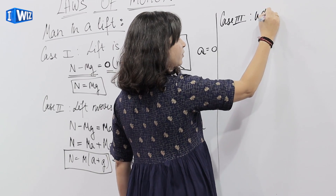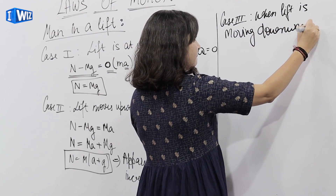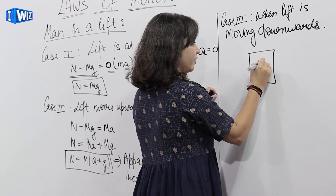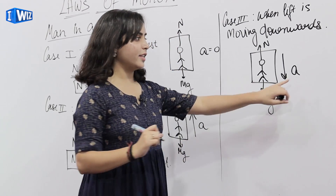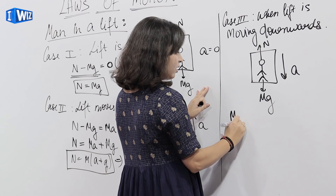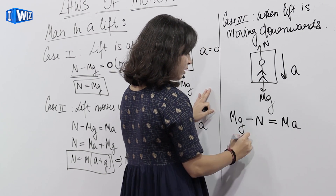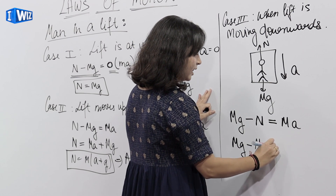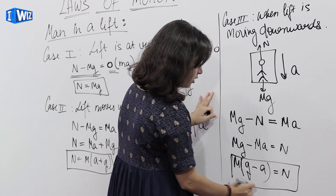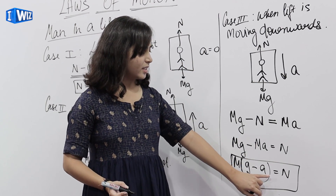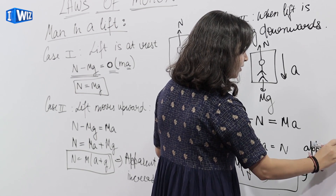Next case — Case 3: when lift is moving downwards. अब lift downwards move कर रही है — MG, normal reaction, and accelerating towards downwards. तो equation: MG minus normal is equals to MA, therefore normal is equals to M(G − A). तो जब lift नीचे आएगी तो apparent weight decreases.